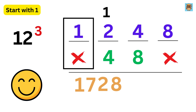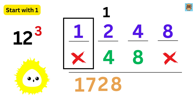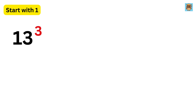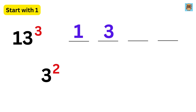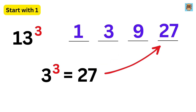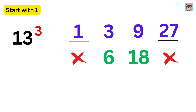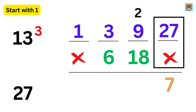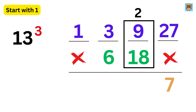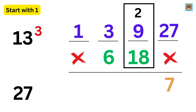Now let's do 13 cubed super fast. Make four spaces: write 1, then 3, then 3 squared or 9, then 3 cubed or 27. Put cross marks below the first and last, and double the two middle numbers — 3 becomes 6 and 9 becomes 18. Now add: for 27 write 7 and carry 2; then 18 plus 9 is 27, add the carry 2 to get 29, so write 9 and carry 2.